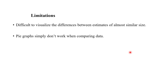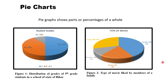There are some limitations of pie charts. It is very difficult to visualize the difference between estimates of almost similar sizes because they look very similar, so it is difficult to differentiate by visualization. Also, pie charts simply don't work when we have to compare two series. For example, if I want to know the choice of movie as per gender for all four categories, we cannot use a pie chart because we cannot compare two series — one for male and one for female — for the same data.